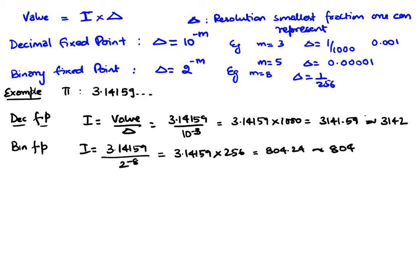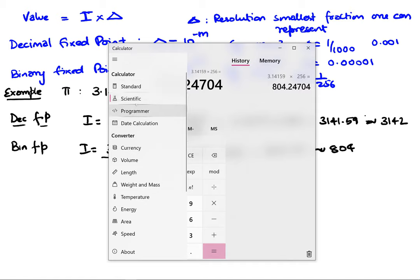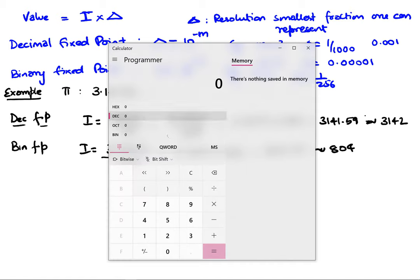In fact, it is not internally going to be represented that way. In fact, it will be represented internally—let's do programmer mode—so that's a decimal value of 804.